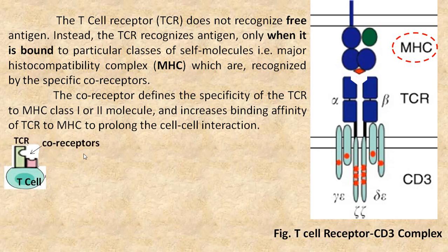The coreceptors define the specificity of T cell receptor to major histocompatibility complex class 1 or class 2 molecules, and increase the binding affinity of T cell receptor to major histocompatibility complex to propagate cell-to-cell interaction.